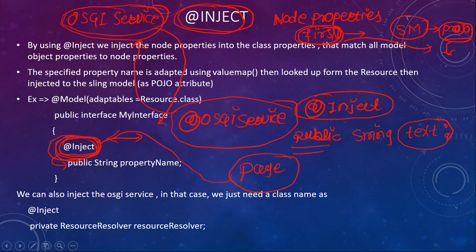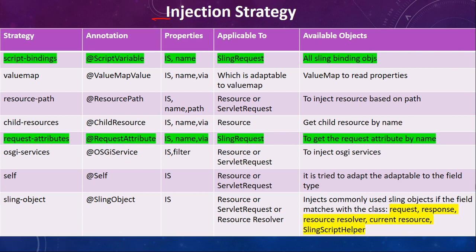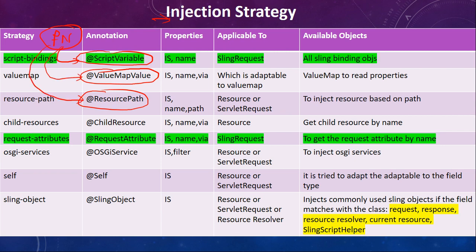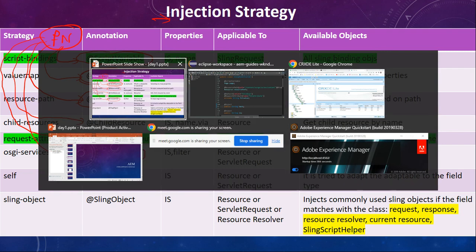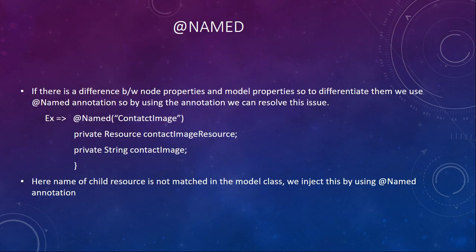Here is the internal structure of how @Inject works. First it searches in the script variable, then in the ValueMap, then in the resource path, then in the child resource, then in the request attribute, and finally in the OSGi service. It is a very time-consuming process. So don't use @Inject for services — use @OsgiService directly. For properties, use @ValueMapValue.